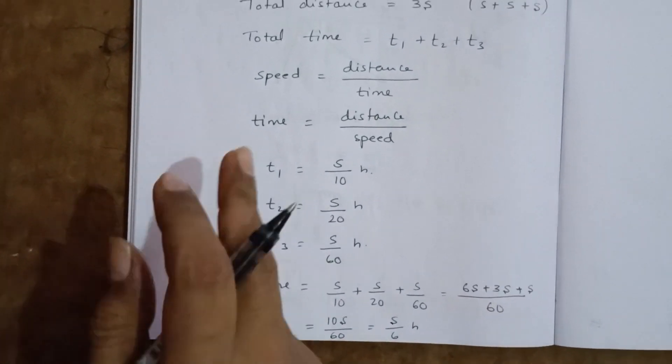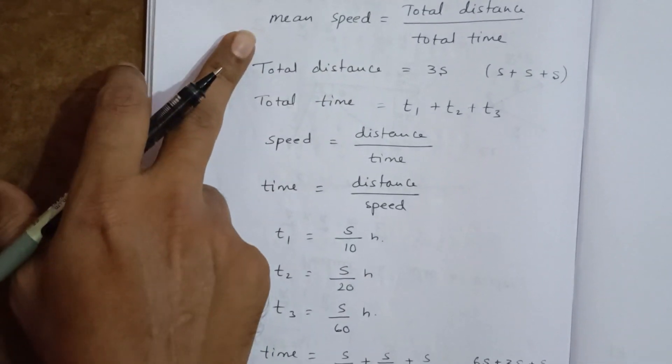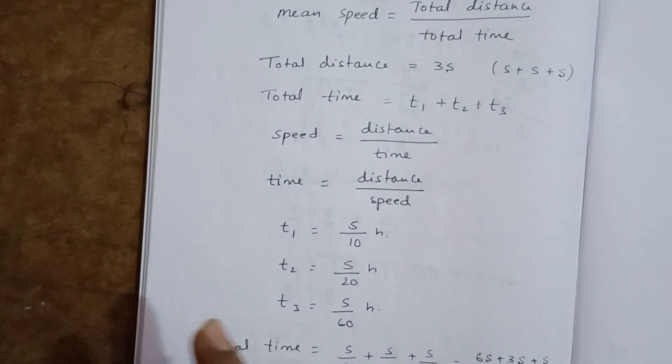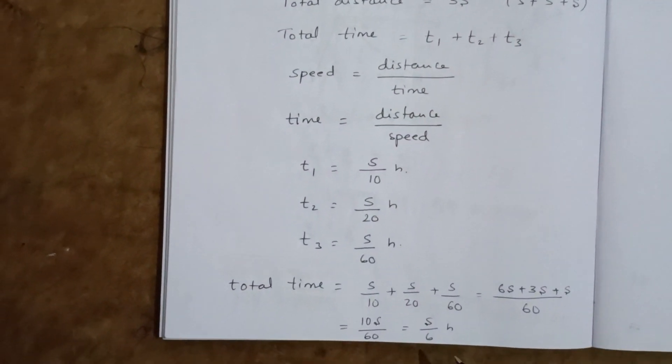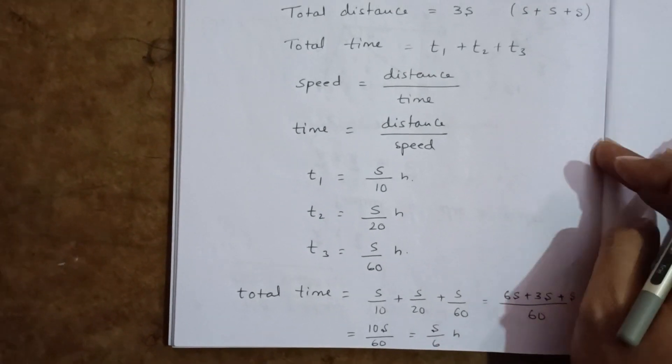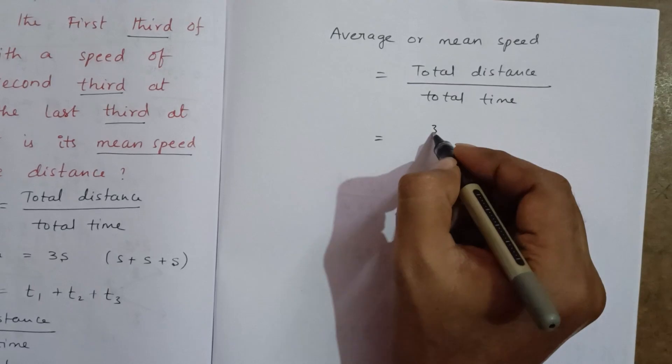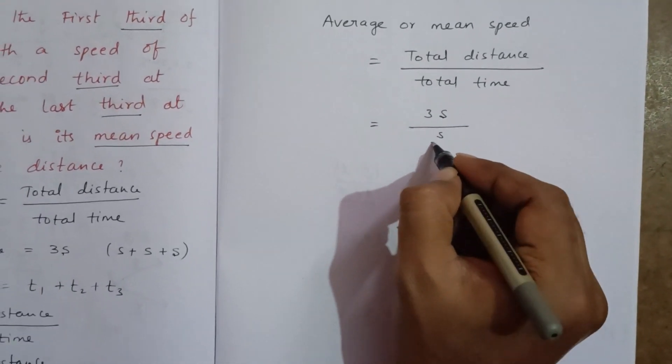Substituting in the formula, mean speed equals total distance by total time. Total distance is 3s, total time is s by 6.